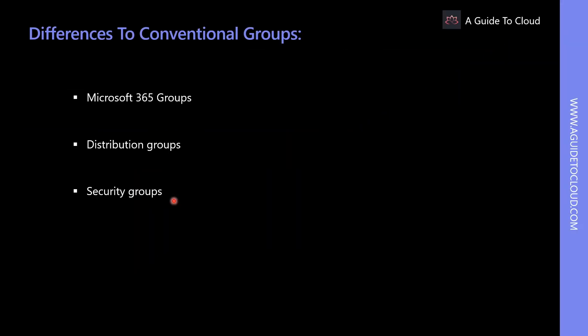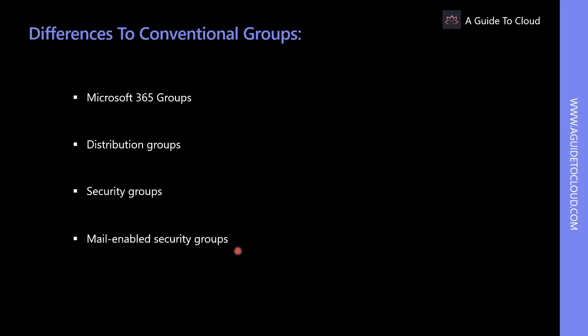Security Groups are used when granular permissions are required on SharePoint resources, for example shared file repositories or different team sites. Mail-enabled Security Groups work the same as Security Groups but include email distribution to members. They are used to give granular permission to SharePoint resources when message distribution to members is also required.